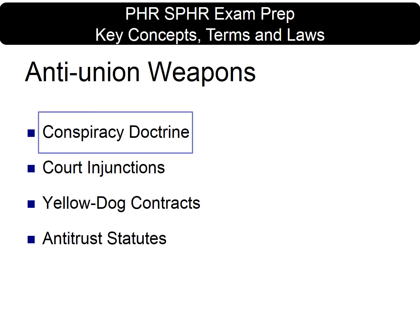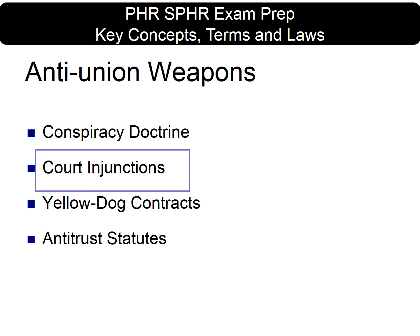A conspiracy doctrine is a weapon used against labor unions in the early 1800s where judges found that unions caused or planned to cause an injustice to other people or society. A court injunction is a court order that directs a person or group to refrain from pursuing a course of action.